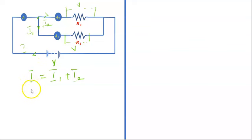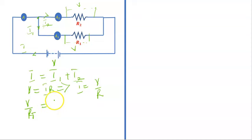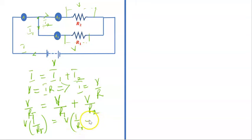The total resistance in this circuit is RT. Now let's see how it works. If I equals I1 plus I2, we know from Ohm's law that V equals IR, which implies I equals V over R. So if I equals I1 plus I2, then V over RT equals V over R1 plus V over R2. Factoring out V, we get 1 over RT equals 1 over R1 plus 1 over R2.